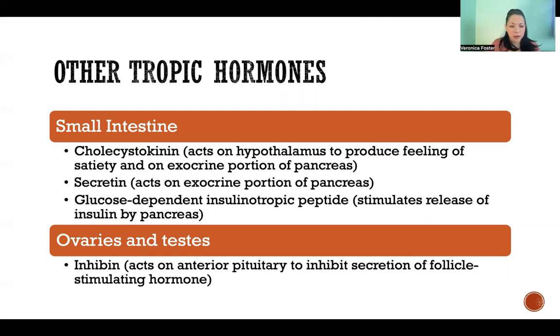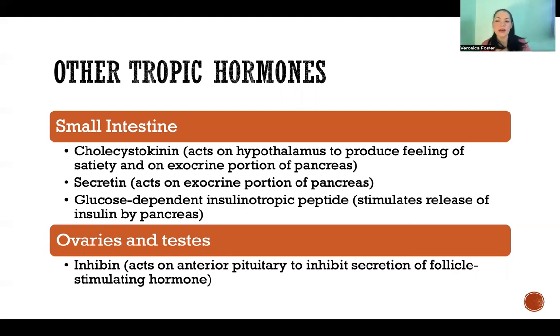And lastly, the ovaries and testes secrete a hormone called inhibin, which acts on the anterior pituitary gland to inhibit the secretion of follicle-stimulating hormone.